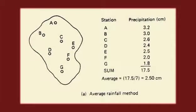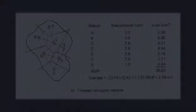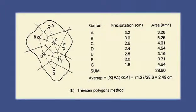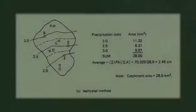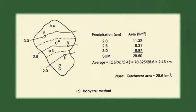It is often necessary to determine a spatial average of precipitation, performed in three ways. The average method averages rain gauge depths without regard to rainfall intensity or area of influence. Thiessen polygons join rain gauge locations with straight lines and draw perpendicular bisectors to determine each gauge's area of influence. The isohyadal method uses rain gauge depths to draw contours of equal rainfall, with the mid-distance between adjacent isohyads determining the area of influence of each isohyad.